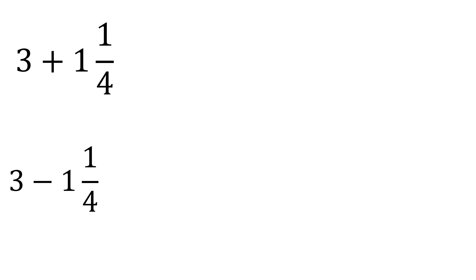Now what about a whole number and a mixed number? For addition, simply add the whole numbers — three and one is four — and then copy the fraction part, one-fourth. That's how simple it is when adding a whole number and a mixed number.